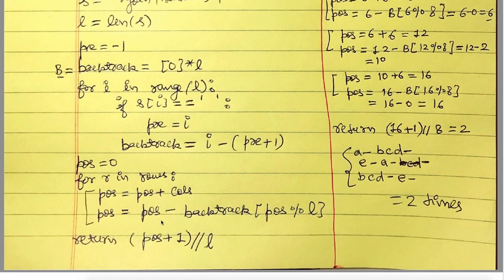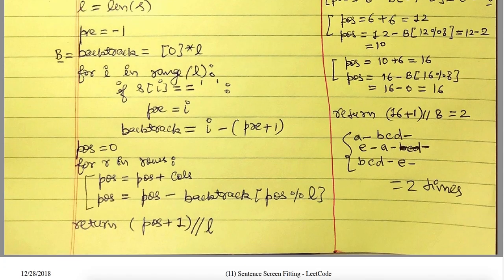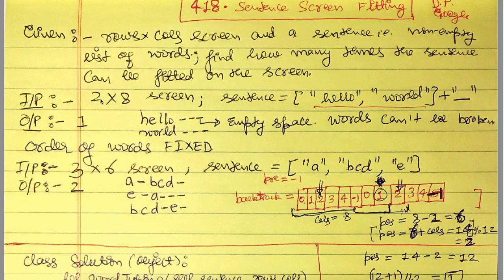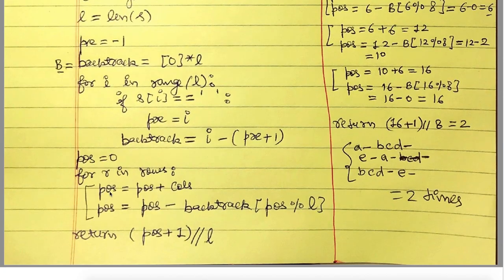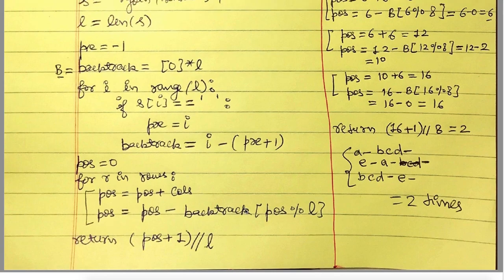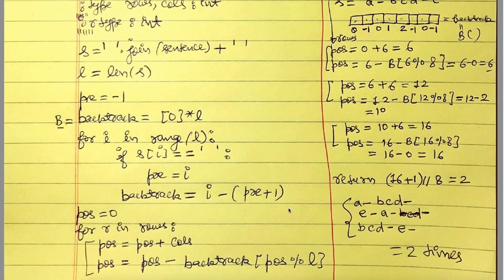Now we find how many times we can write the sentence. `pos` tracks the writing position, initialized to 0. We iterate over each row. For the first row of a 2×8 screen, we add the number of columns: pos = 0 + 8 = 8. Then we look at backtrack[pos % L], where L = 12. So 8 % 12 = 8, and we look at backtrack[8].